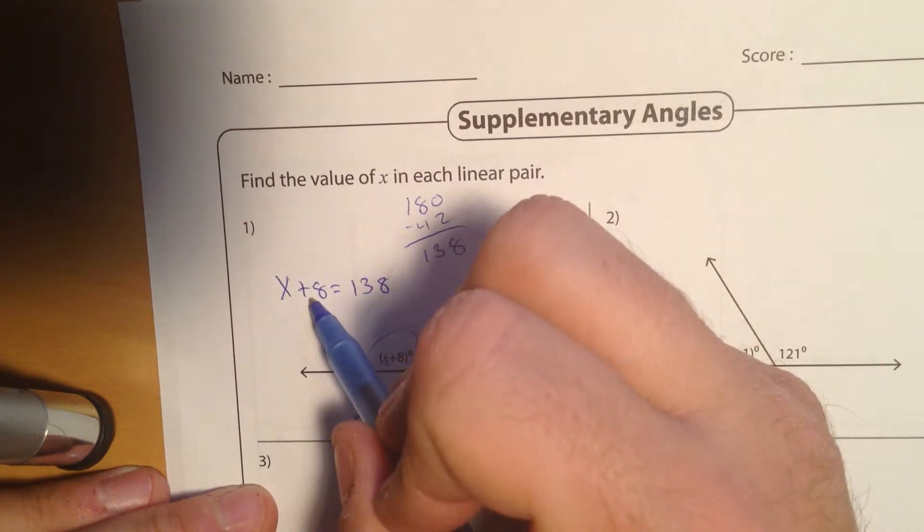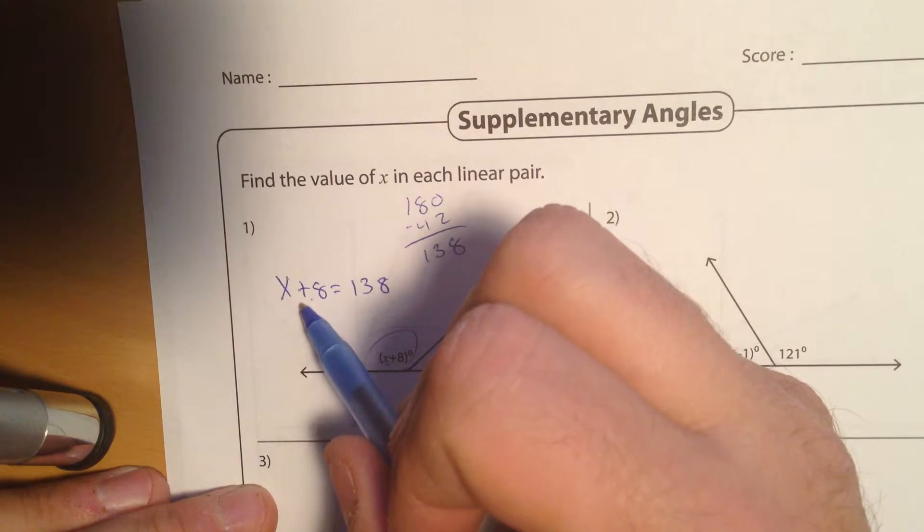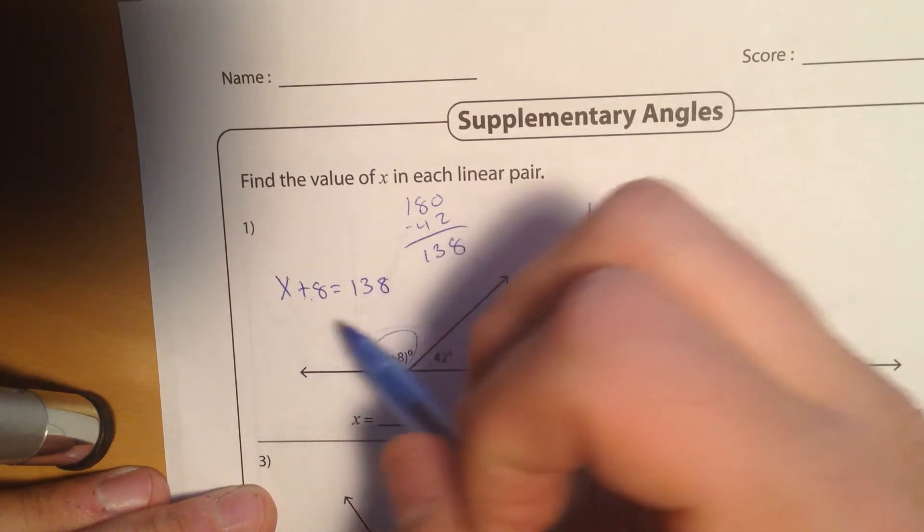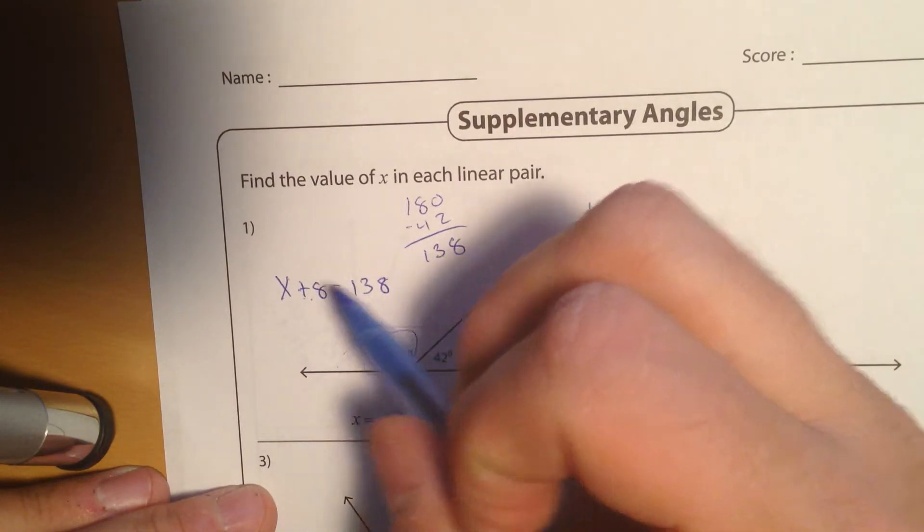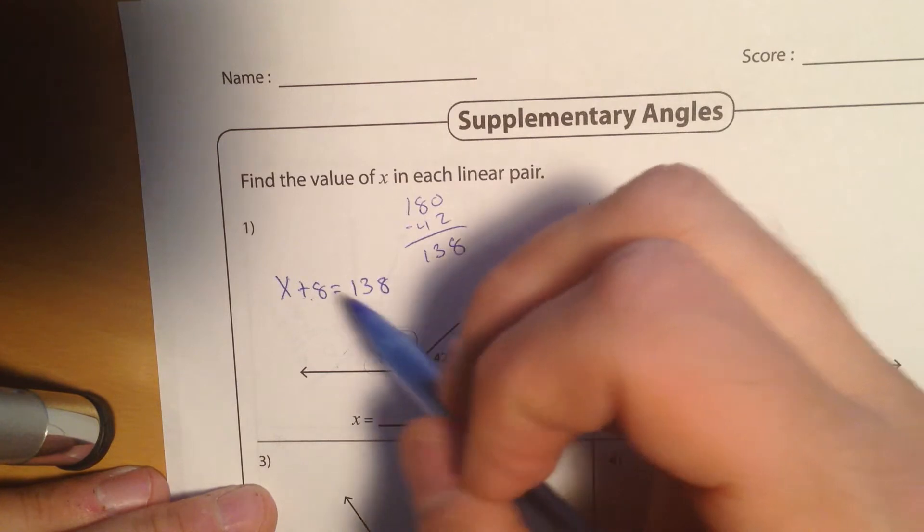Now, 8 is being added. So like we talked about yesterday, you're going to do the opposite. If it's being added, you're going to subtract it from both sides. If it's being subtracted, you're going to add it to both sides. If it's being multiplied, you're going to divide it by both sides. And if it's being divided, you're going to multiply it by both sides.